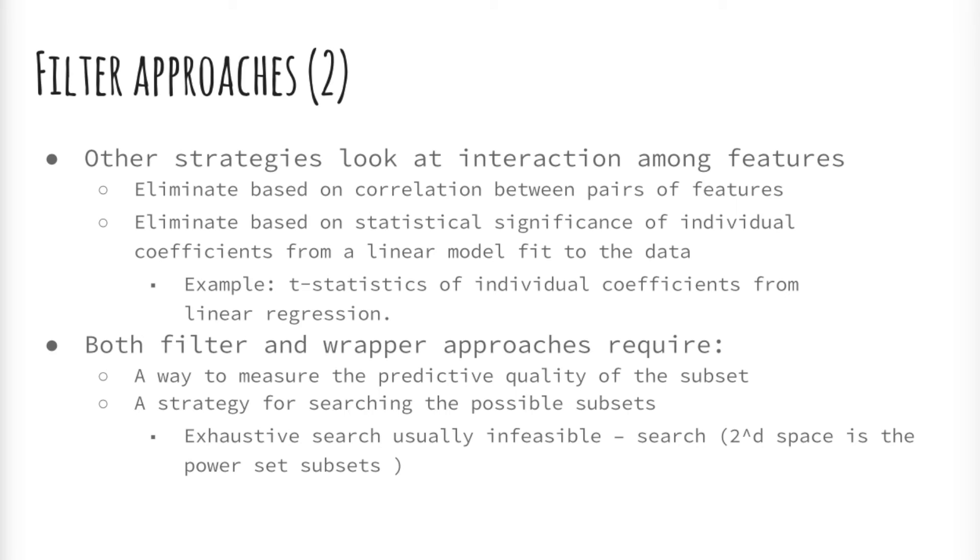Both filter and wrapper approaches require a way to measure the predictive quality of the subset and also be a cost-efficient strategy for searching the possible subsets. An exhaustive search is usually an infeasible search. The balance between the advantages and disadvantages of filtering approaches leads to a conclusion that light filtering is an efficient initial step if the running time of our learning algorithm could be an issue.